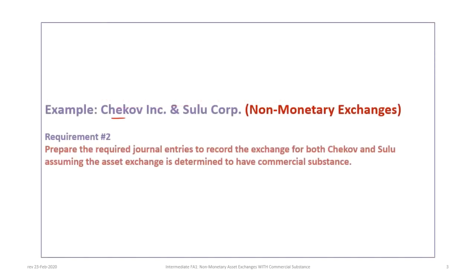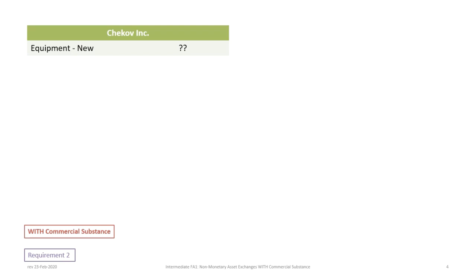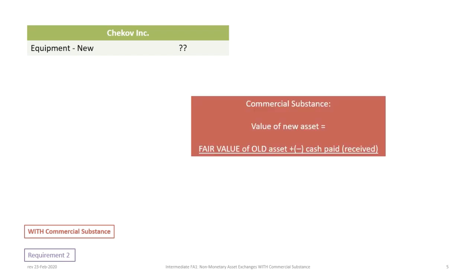This example continues the Chekhov and Sulu scenario, focusing on requirement 2: recording the required journal entries for the exchange where commercial substance does exist. We begin by determining the value of the new asset. In situations of commercial substance, the value of the new asset is the fair value of the old asset plus or minus any cash paid or received.